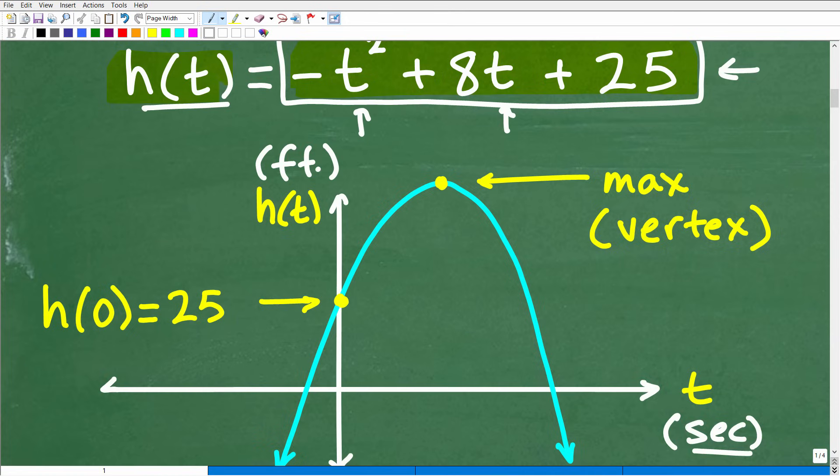What does that mean? Well, maybe we're throwing this ball from a building that's 25 feet. We're basically starting the flight of the ball from a building that's 25 feet tall. Effectively what I'm saying here is that hopefully you have the skills and knowledge to be able to graph this parabola.